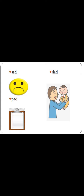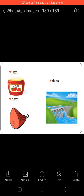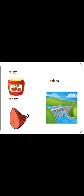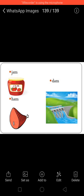And next: Dad. D-A-D, Dad. Next: Jam. J-A-M, Jam. Next: Ham. H-A-M, Ham. And next: Dam. D-A-M, Dam. Now understood, children, how to read three letter words along with phonic sounds?